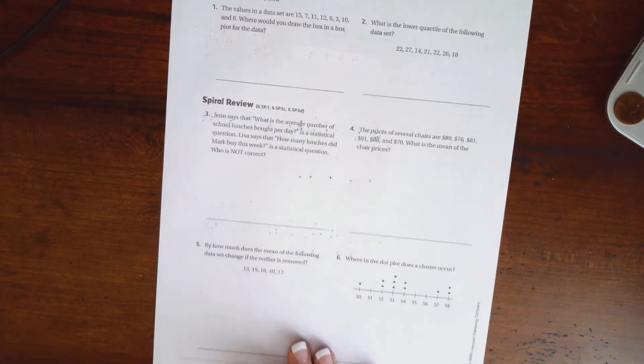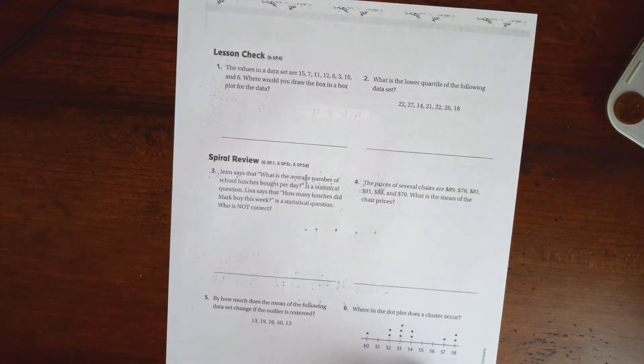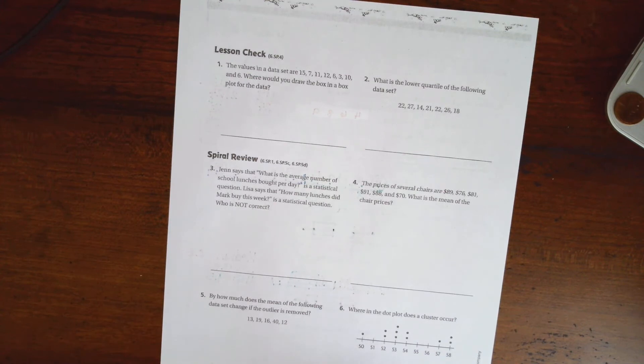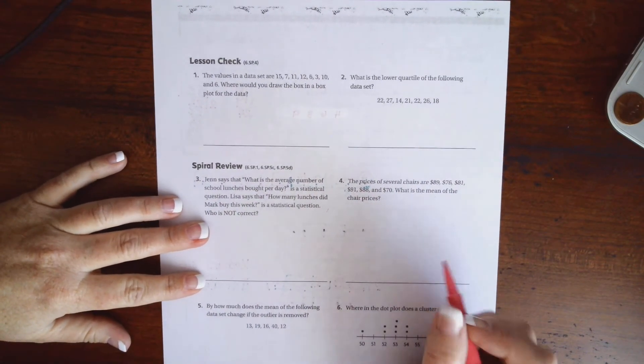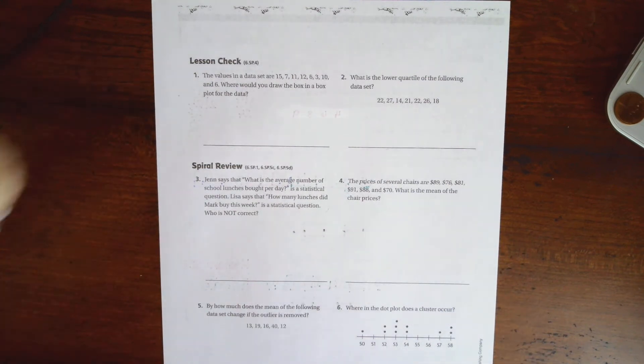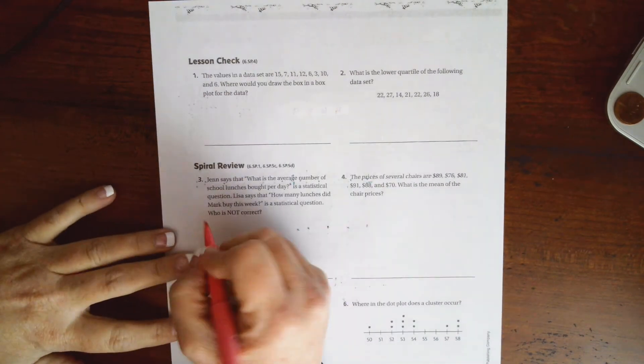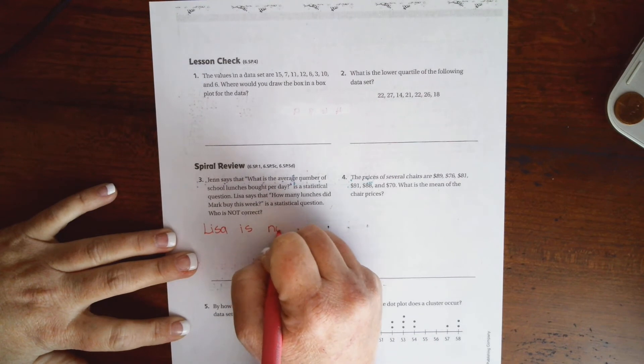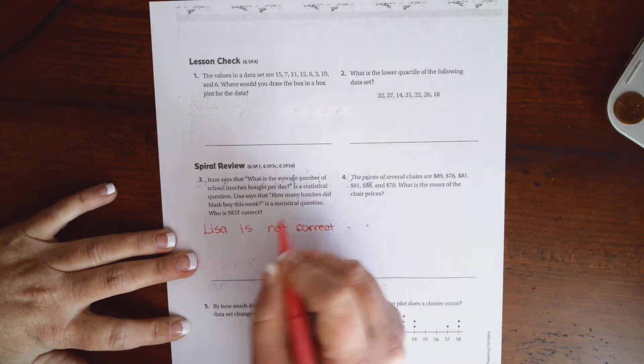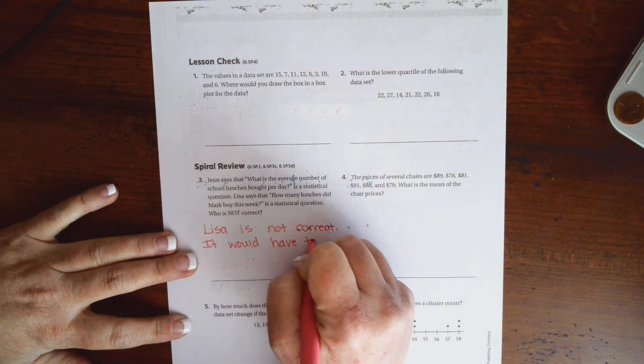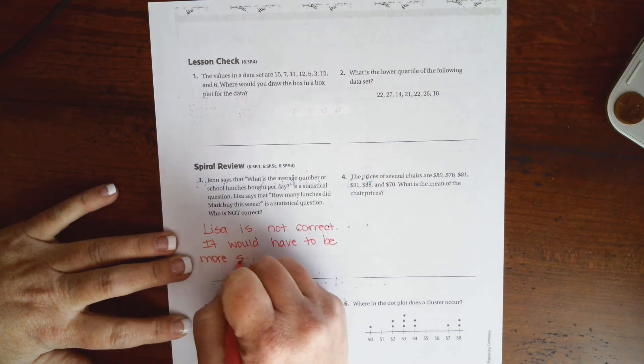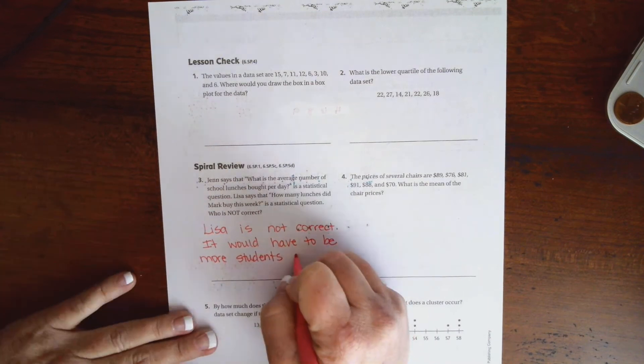This says, Jen says, what is the average number of school lunches bought per day? Lisa says, how many lunches did you buy this week? Which one is not a statistical question? Well, in order to be a statistical question, it has to have a lot of data. It can't just be one day. It can't just be one person. So Lisa would be not correct because it would have to be more students or more weeks.